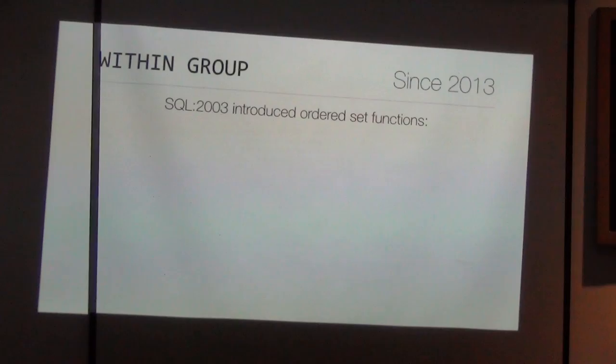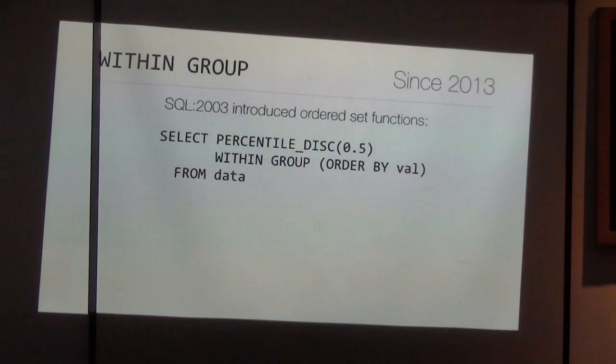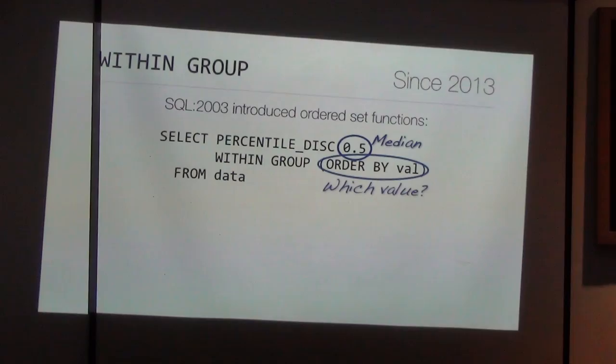The modern solution uses the so-called ordered set functions. One of these is PERCENTILE_DISC(0.5) — 0.5 means the middle value on a range from 0 to 1. The WITHIN GROUP clause provides an implied ORDER BY within the group, and takes the middle value. Same result as the SQL 92 approach, just slightly better.